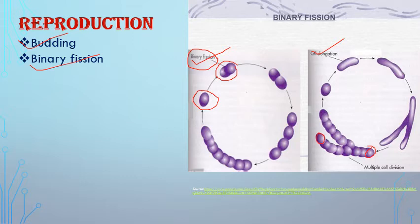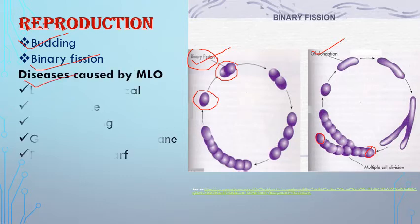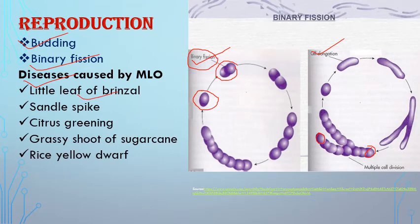Mycoplasma causes several diseases. The first is little leaf of brinjal, where the brinjal leaf size is highly reduced and the plant looks like a bush. The disease is transferred from the infected plant to a fresh plant by insects like leafhoppers, and the plant produces no fruits. The next is sandal spike disease, where the spike becomes rosette-like — similar to radish, where the stem is highly reduced and the leaves above ground form a rosette structure.